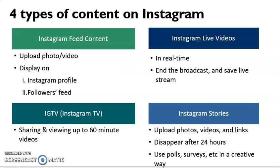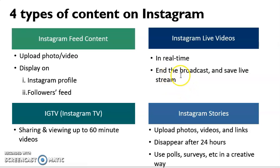There are four types of content on Instagram. First is feed content — you upload photos or videos for people to see and get engagement. You can also post short-form videos to get more response. Second, you can use Instagram TV to share up to a 60-minute video that you create for your products. Third, Instagram Stories — you can upload photos and stories that disappear after 24 hours. Fourth, you can also use polls or surveys in an attractive way to create more feedback for your Instagram account.